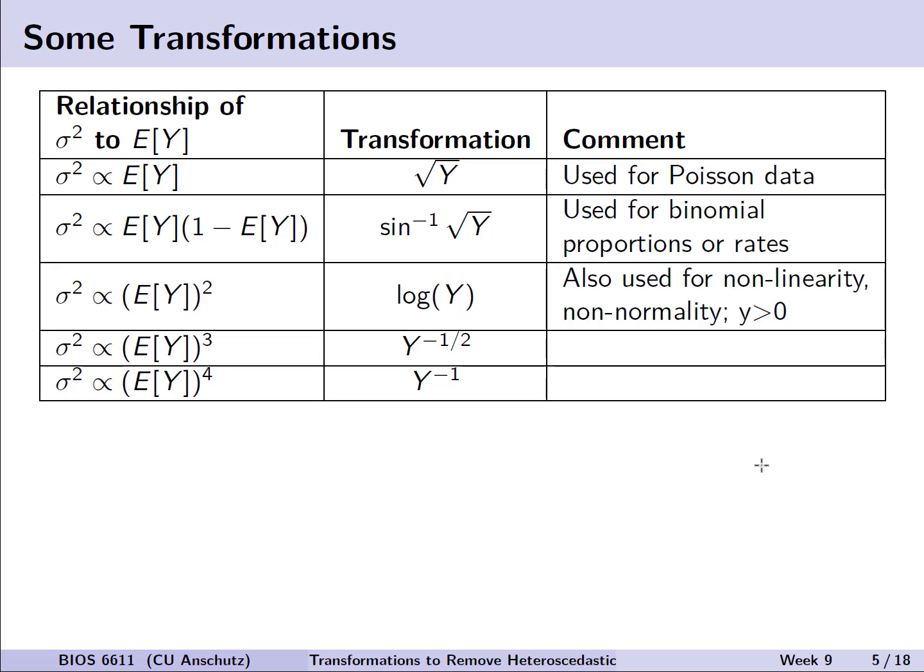For example, we just have a couple transformations listed on the slide here. If we see that the variance is proportional to the mean, we might take a transformation of the square root of our outcome y. This is frequently used if we have Poisson data where we're assuming that the mean and the variance should be equal.